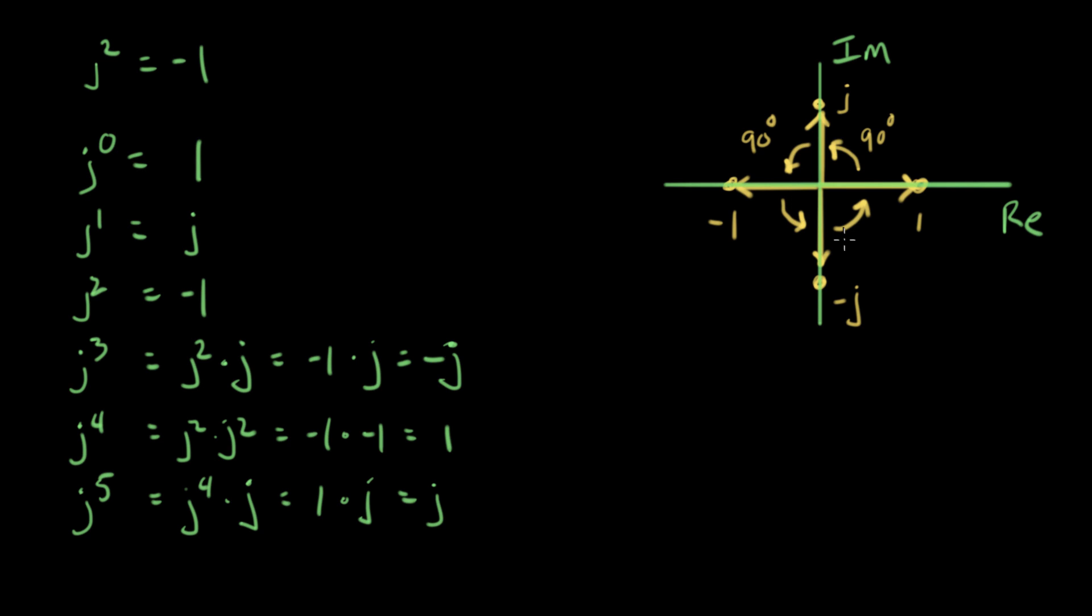And it's the reason that we use imaginary numbers in electrical engineering. So the key idea here is that J rotates. That's the point. That's what we love about J.